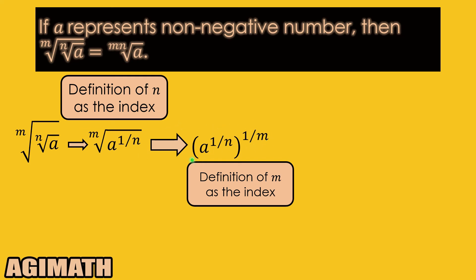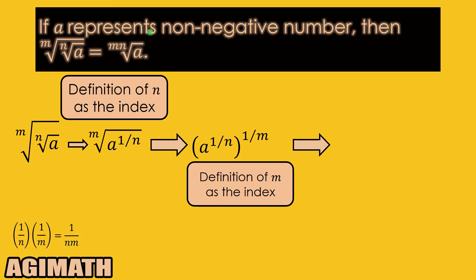Now we have a power being raised to another power. Applying the power of a power rule — if we have an exponent raised to another exponent, we simply multiply them — that gives us 1 over n times 1 over m. Multiplying fractions, we multiply numerators and denominators: 1 times 1 is 1, and n times m is nm. Our final product should have index mn, but we have nm.